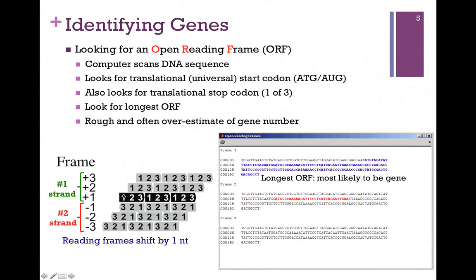If we shift that by one nucleotide, that's our plus two strand — now we have a different sequence of codons and therefore a different sequence of amino acids. We can shift that one more position, and we have yet a third reading frame. So there are three possible reading frames in each of the two strands, and they differ by one nucleotide.